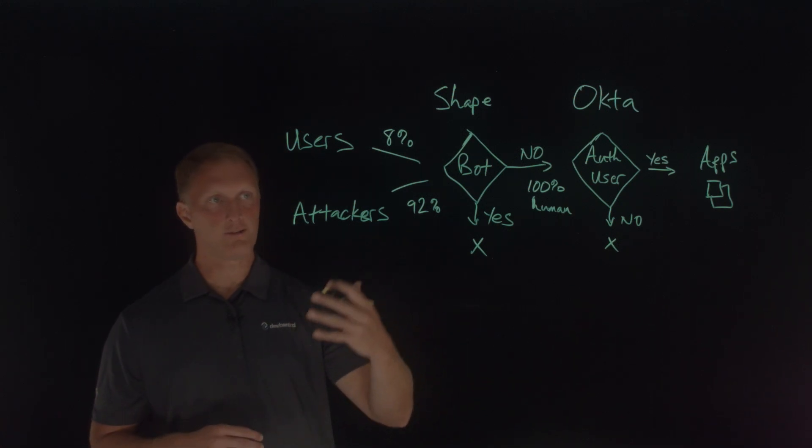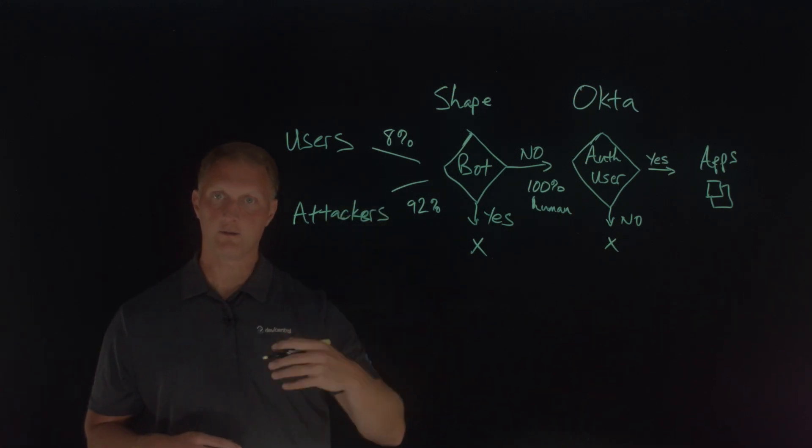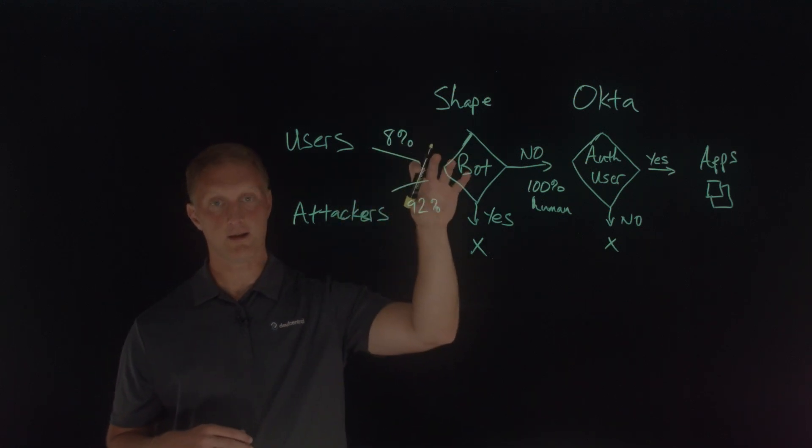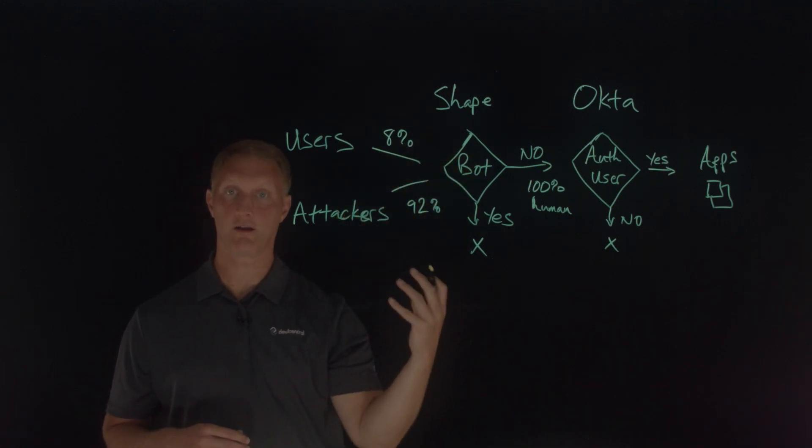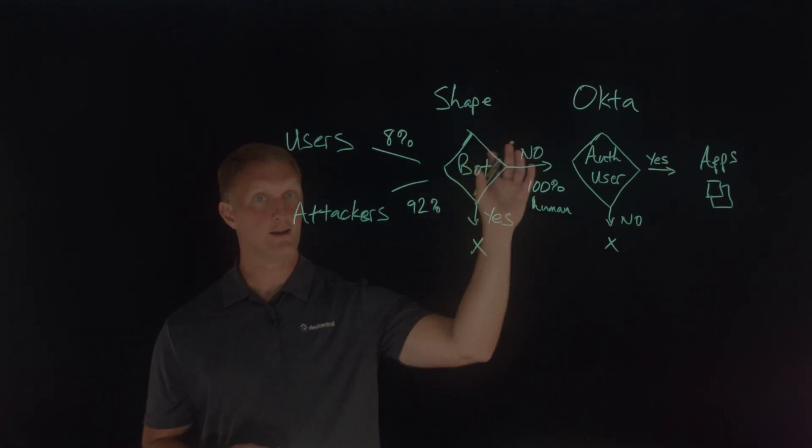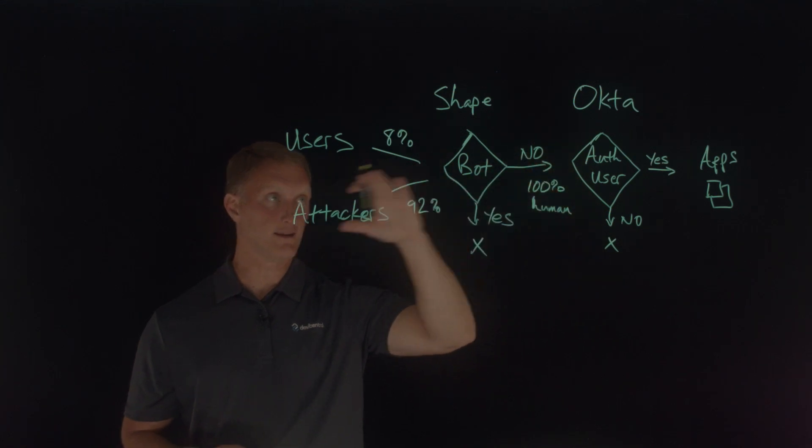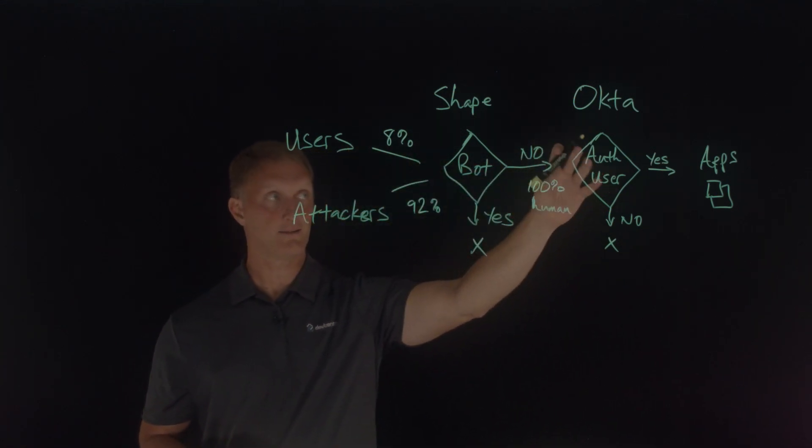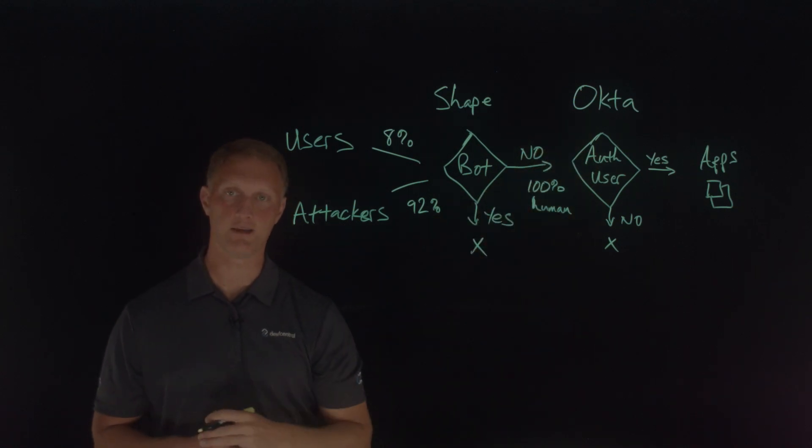I'll also note that fraudsters or attackers continue to retool. They disguise themselves as human, so they want to look as human as possible. But that's where Shape comes in and Shape's ability to spot automations without impacting the user experience is critical to securing the customer identity. Again, because only legitimate human traffic is going to be able to come in to even hit this authentication piece.